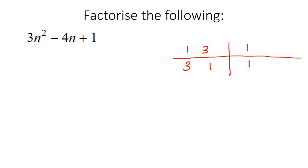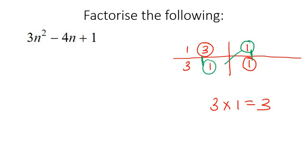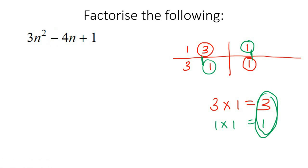Choose a number — I'll choose 3 — then choose a number on the other side. Multiply them: that gives 3, which looks close to 4. Then choose the opposites, and multiply those: 1 times 1, which is 1. Now, can you make negative 4 from 3 and 1? Yes — negative 3 take away 1 gives negative 4. So we can go ahead and make our two brackets.